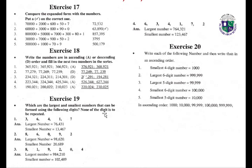Exercise twenty: write each of the following number ranges, then write in ascending order. Smallest 4-digit number: 1,000. Largest 6-digit number: 999,999. Largest 5-digit number: 99,999. Smallest 6-digit number: 100,000. Smallest 5-digit number: 10,000. In ascending order: 10,000 to 99,999.